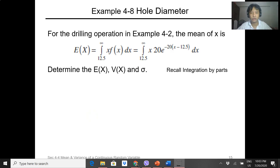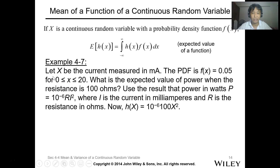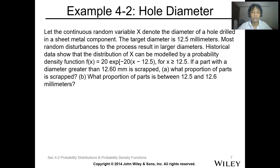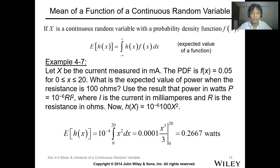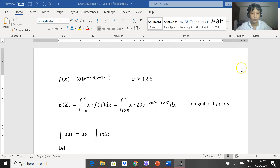We'll continue with our discussion on the continuous probability distribution, still on the mean and variance. We'll have Example 4-8 for the hole diameter. Previously we had Example 4-2, so we'll revisit that problem. I've prepared a word file for the calculation of the mean value and the variance of the function.